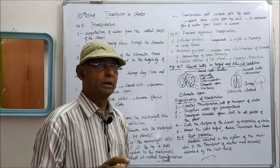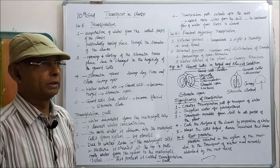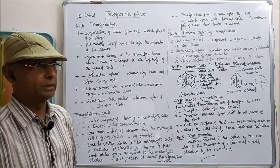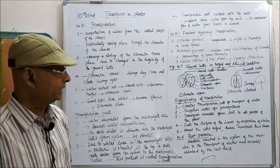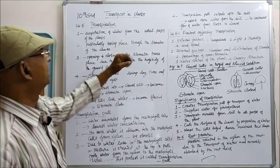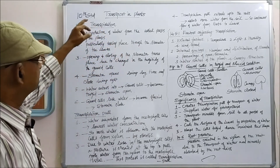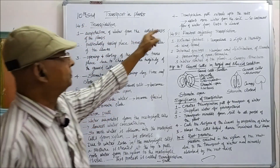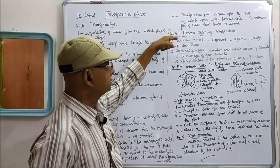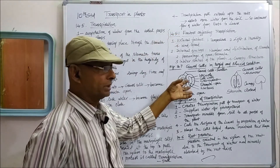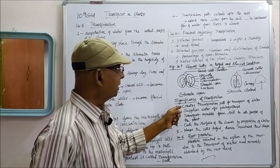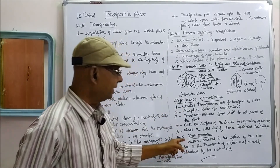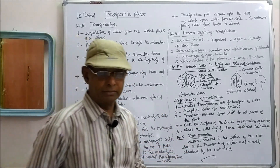Root pressure always takes place in the xylem of the root when the xylem receives more water absorbed by the root hairs from the soil. So in summary, we have covered: transpiration, the transpiration curve, factors affecting transpiration, the structure of stomata, the significance of transpiration, and root pressure.